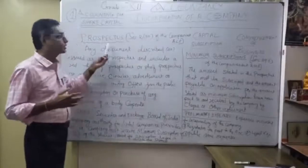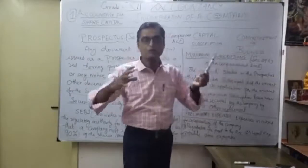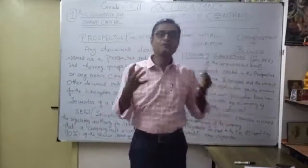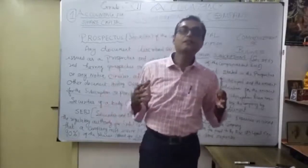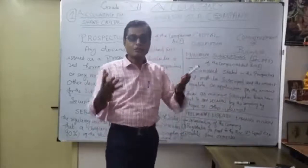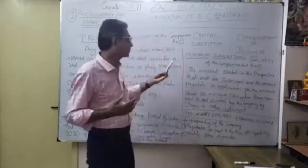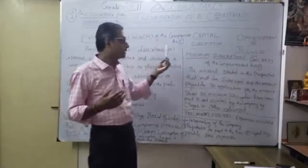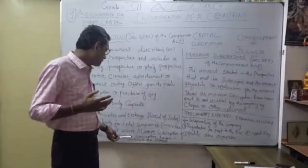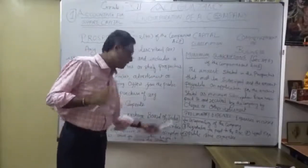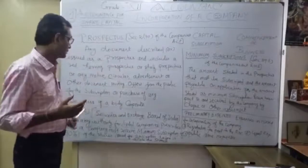Through the prospectus, you should know the meaning of minimum subscription and how much the company needs to collect before going for allotment. Suppose a company applies to the public — you must achieve the minimum subscription, then only can you move to the level of allotment of shares. The minimum subscription is 90% of the shares issued for subscription before allotment.